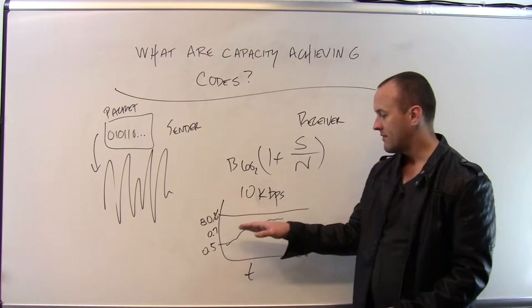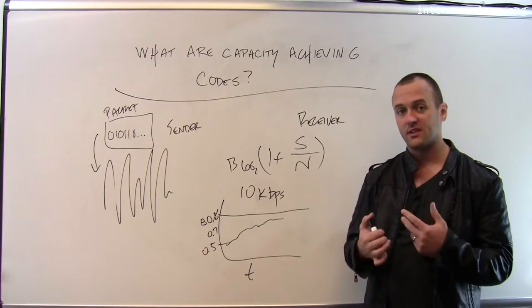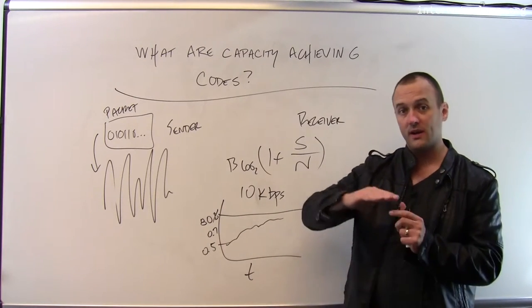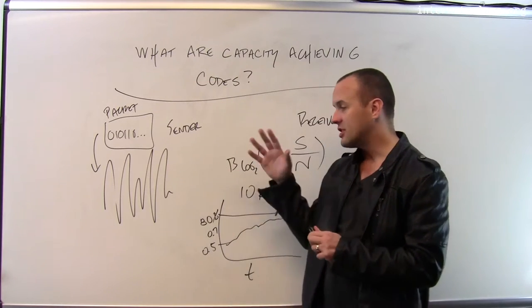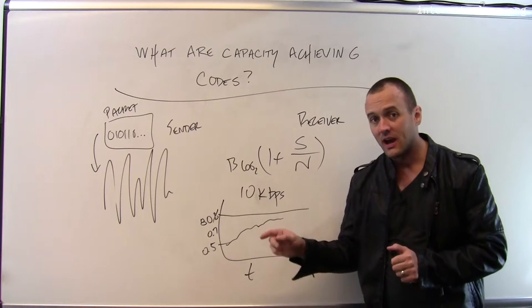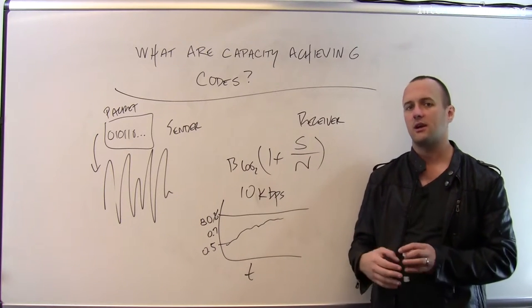What's happened over the years is we've had better and better encodings, and today we actually have encodings that are referred to as capacity achieving codes that can approach infinitely close to the Shannon limit. So I can get 0.99999% of the Shannon capacity for a given channel. These are referred to as capacity achieving codes.